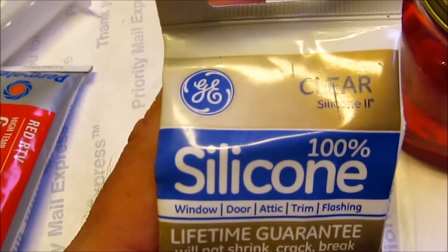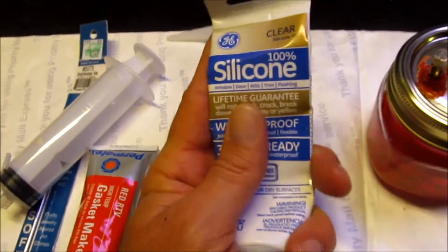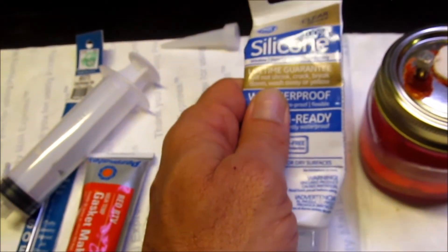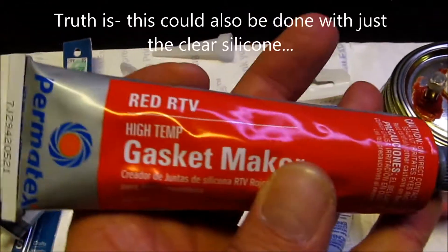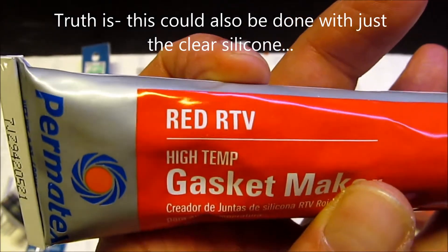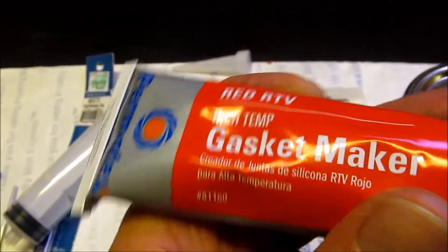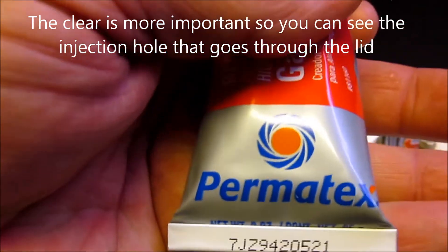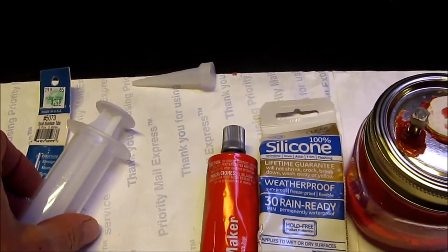Then, a little bit of silicone—a tube like that from Walmart or any DIY store, four or five bucks maybe. The high temperature RTV gasket maker from Permatex also runs four or five bucks for a tube at Walmart or any auto supply place.